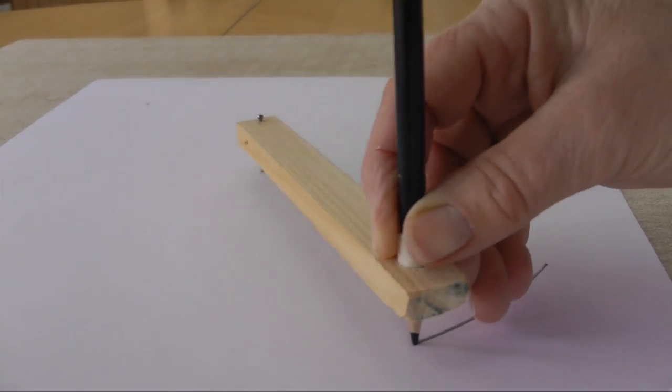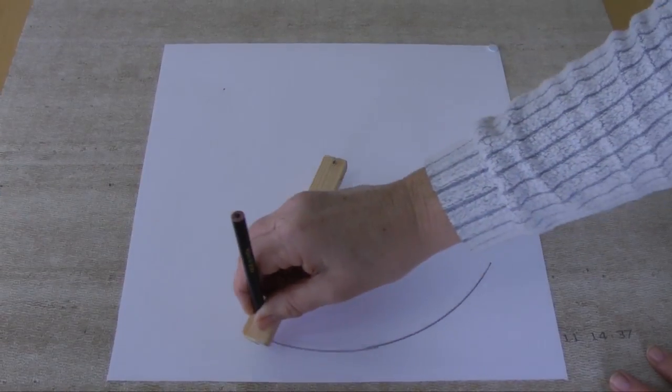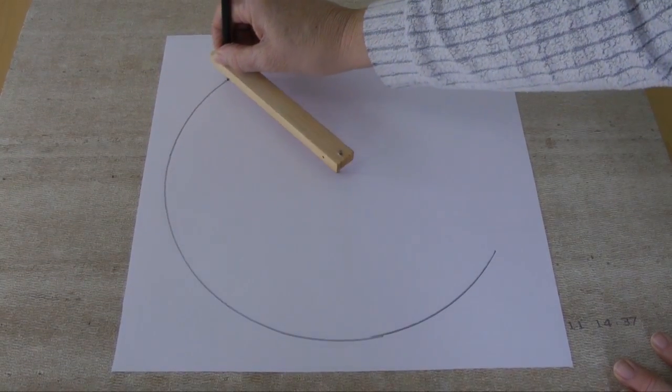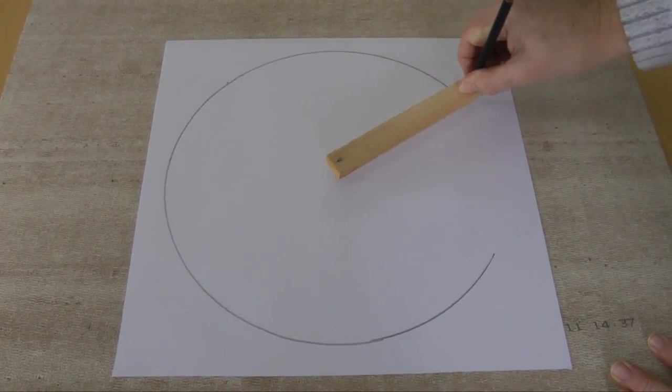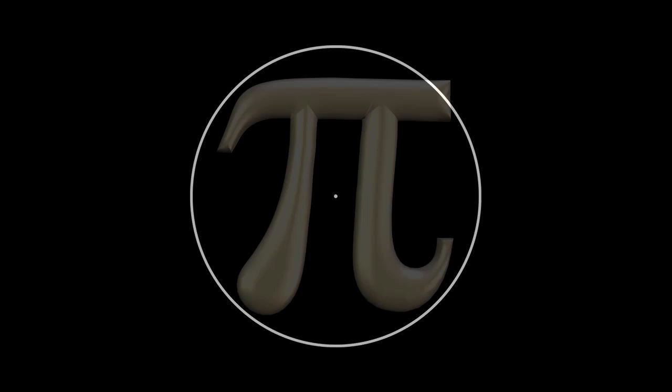We don't know when the geometry of the circle first attracted human interest, but we do know that this simple shape precipitated one of the most ancient and unresolved mathematical endeavors, the determination of pi.